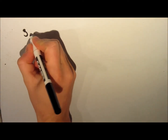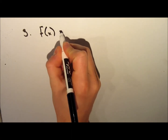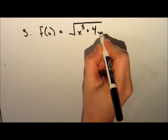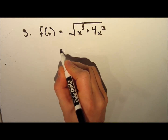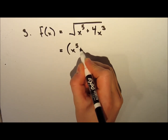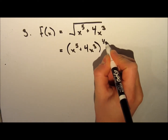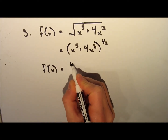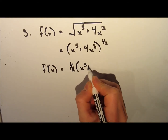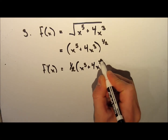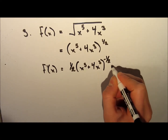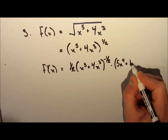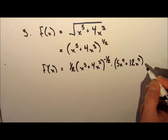Now I'm going to go through a couple more practice questions — I recommend you try these on your own first and then look at my answers. The first one is f of x equal to the square root of x to the exponent 5 plus 4x cubed. We can rewrite this as x to the exponent 5 plus 4x to the exponent 3, all to the exponent one half. To take the derivative, we take the exponent one half down in front, leave the inside the same, subtract 1 from the exponent to get negative one half, and multiply by the derivative of the inside which is 5x to the exponent 4 plus 12x squared. That's the derivative.